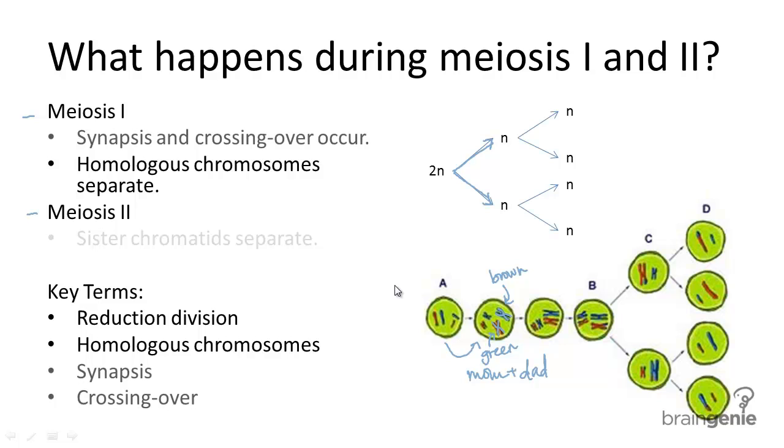Synapsis and crossing over also occur in meiosis I, which is the process of exchanging genetic information between two chromosomes in a homologous pair. Once the exchange is complete, homologous chromosomes separate by lining up randomly at the center of the cell and moving to opposite sides. The resulting haploid cells are genetically unique.